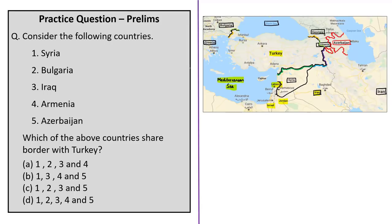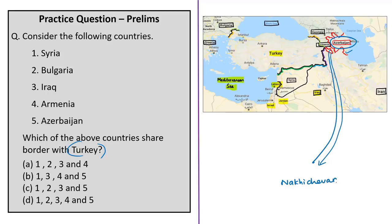The eleventh question is a map-based question about which countries share a border with Turkey. An important fact: Azerbaijan has a separate exclave called Nakhchivan Autonomous Region that borders Turkey. Syria, Bulgaria, Iraq, Armenia, and Azerbaijan all share a border with Turkey. So all five countries in the list are correct, making the answer option D: 1, 2, 3, 4, and 5. Turkey also shares borders with the Mediterranean Sea, Black Sea, Greece, Georgia, and Iran.